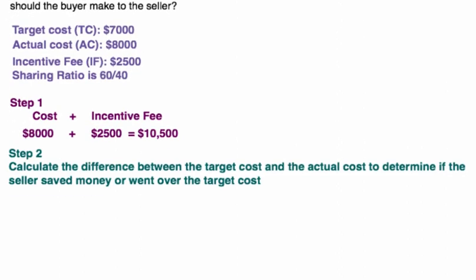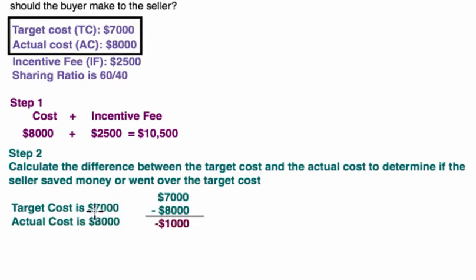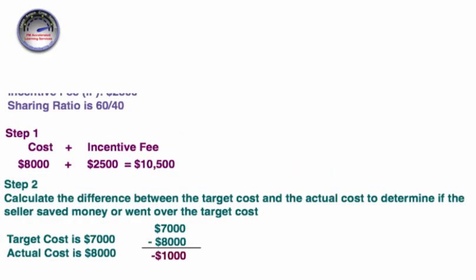Step number two: calculate the difference between the target cost and the actual cost to determine if the seller saved money or went over the target cost. The target cost is $7,000 and the actual cost is $8,000. $7,000 minus $8,000 is negative $1,000, so we have an overrun of $1,000. Just two easy steps to go.